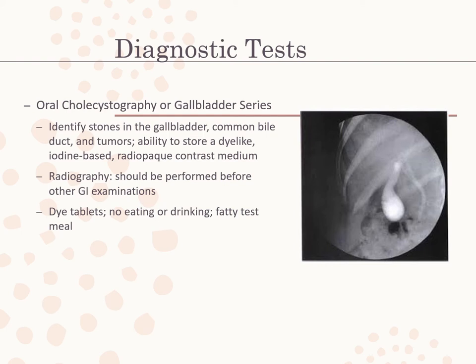For cholecystography, the client eats a fat-free meal the night before. It is important to ask about iodine allergy. The client swallows six iodine-containing contrast tablets, one every five minutes, 10 to 12 hours before the procedure with at least 250 mL of water, then remains NPO. If nausea and vomiting occur, the physician must be notified to order more tablets or reschedule the test. After initial x-rays, a fatty test meal or synthetic substance may be given to stimulate gallbladder contraction and additional x-rays are taken to determine the gallbladder's ability to empty.